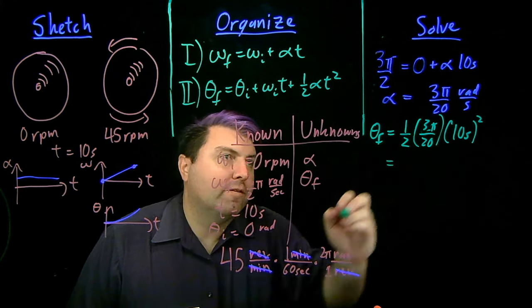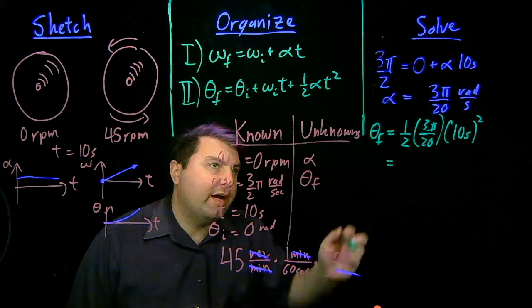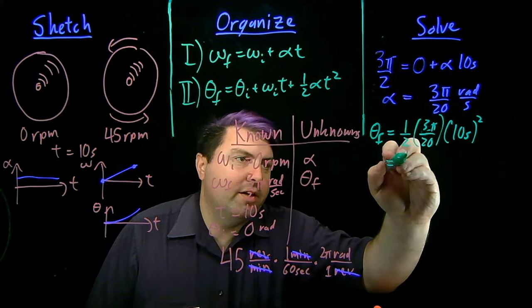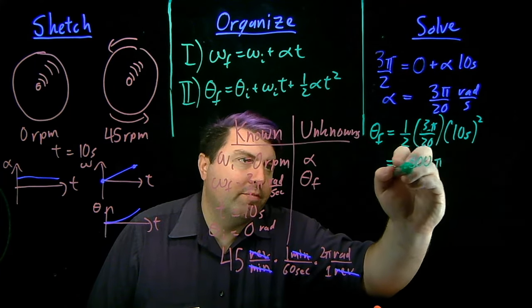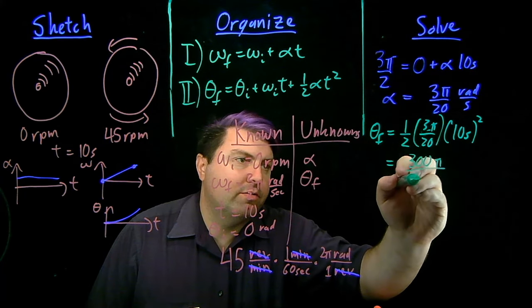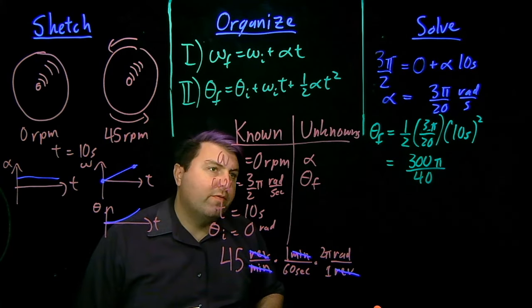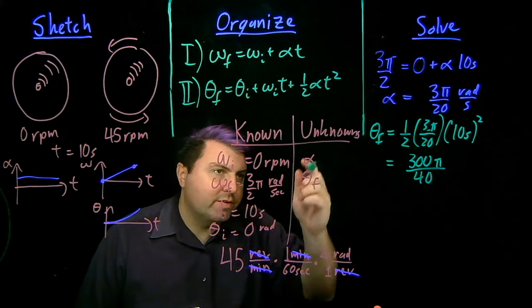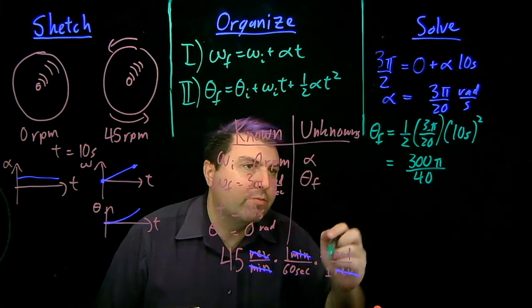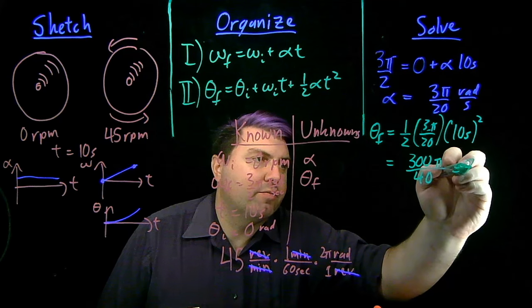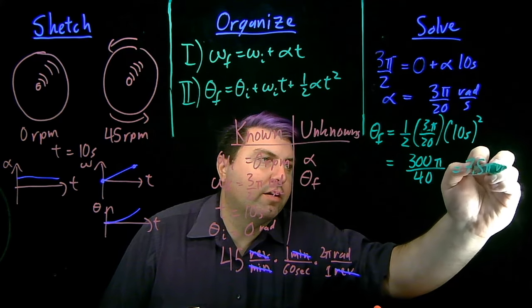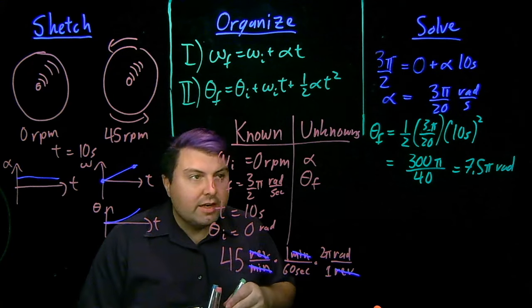So just quickly before we cancel anything out, 3 times 10 times 10 is 300 pi. 20 times 2 is 40. So 300 pi divided by 40. We can write 0 and 0 and 3 divided by 4 is 7.5. So we get 7.5 pi radians.